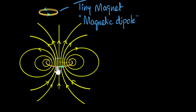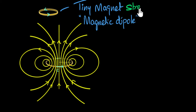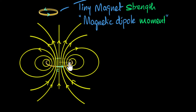That brings us to the next question: what determines the strength of this tiny magnet, or the magnetic dipole? Current is definitely one of the factors, but what else determines the strength of this dipole? The technical term for the strength is we call it the moment — specifically, the magnetic dipole moment. The symbol we use is M.